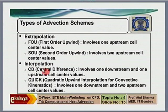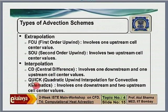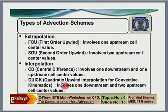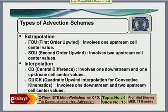First-order upwind involves only one upstream point — constant extrapolation. Second-order upwind involves two upstream points — linear extrapolation. More upstream points can be used; one point gives first order, two gives second order, three gives third order accuracy. Central difference uses one upstream and one downstream neighbor (linear interpolation). QUICK (Quadratic Upwind Interpolation for Convective Kinematics) uses one downstream and two upstream neighbors — quadratic interpolation.